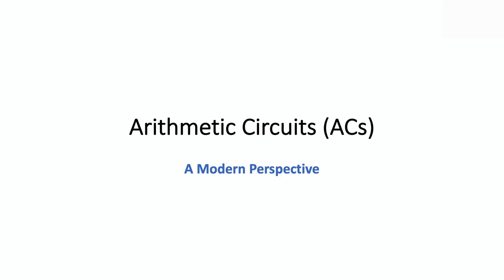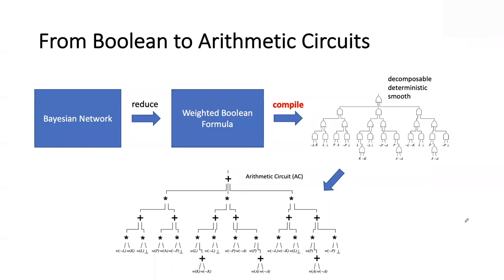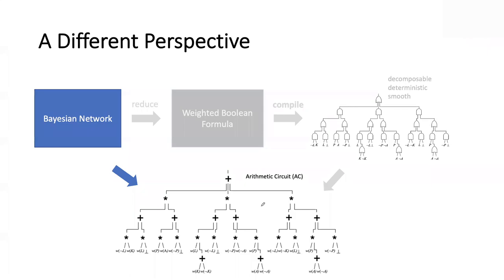To put this in perspective of what we've already done: if you look at the original proposed pipeline, where we go from something like a Bayesian network or more generally a graphical model, write out the Boolean formula, compile a Boolean circuit, and get an AC — we're going to cut out the middleman. We're going to talk directly about the relationship between these circuits and the original model. In fact, we're going to abstract one more level up — not talking about the Bayesian network, but about the notion of a factor.